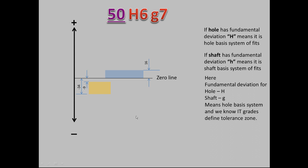Suppose, for the hole, the fundamental deviation remains H but the IT grade is changed from 6 to 7. The tolerance zone increases to 25 microns from 16 microns. Notice that only the upper deviation has changed, but the lower deviation remains the same at 0 microns.